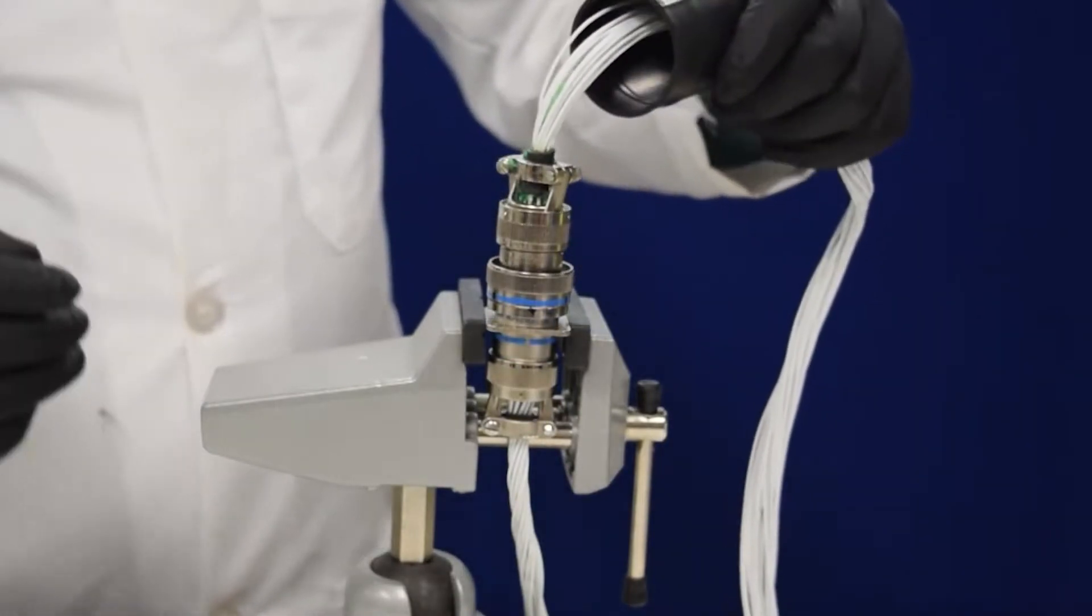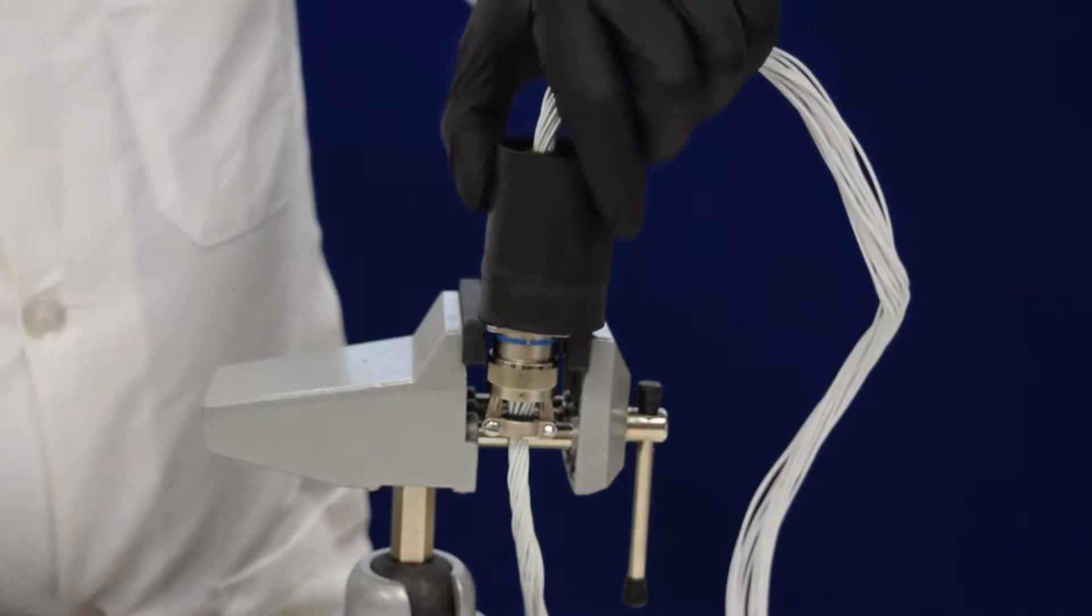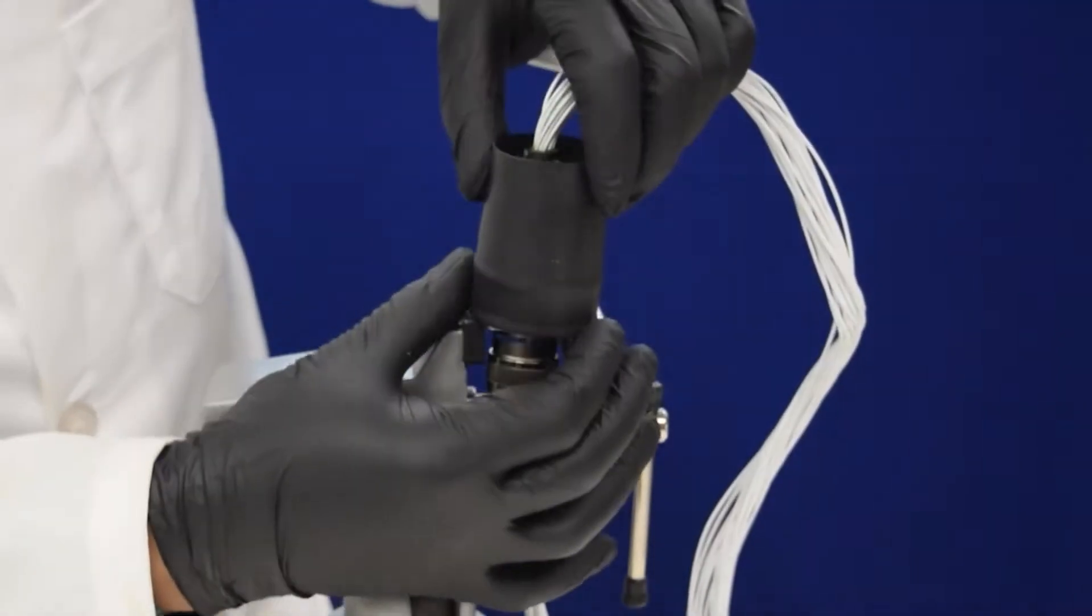The ends of the boot are marked H and J. Slide the boot, J end first, over the connector. Ensure that the H end is facing toward the connector.